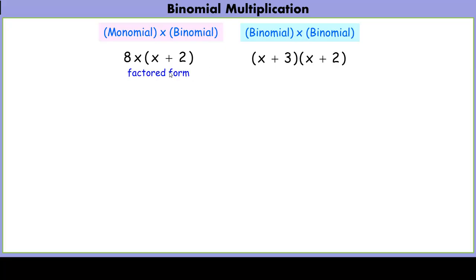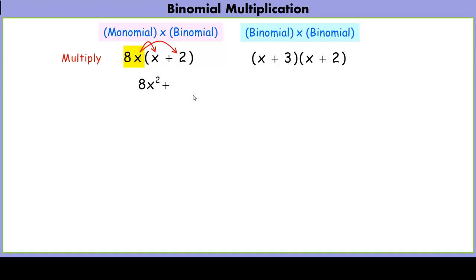If I were to ask you to multiply this, what you would do is distribute. You would distribute the monomial that's outside the parentheses. So, 8x times x gives us 8x squared, and 8x times 2 gives us 16x. Once we've distributed the 8x to both terms in the binomial, we have ourselves a nice little polynomial, and we consider this in polynomial form.